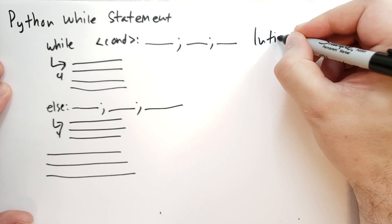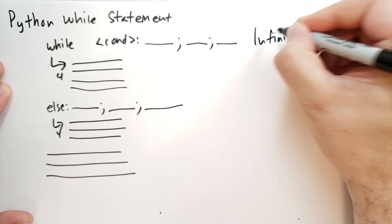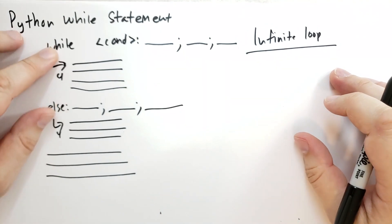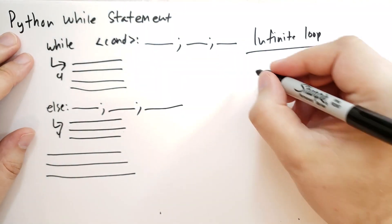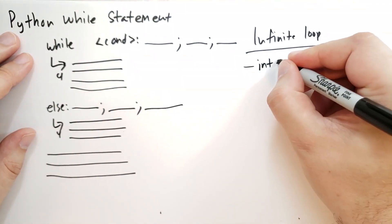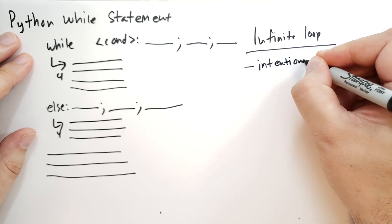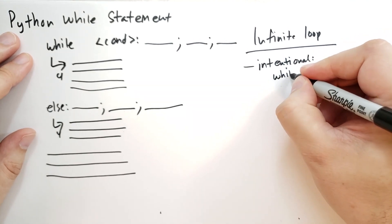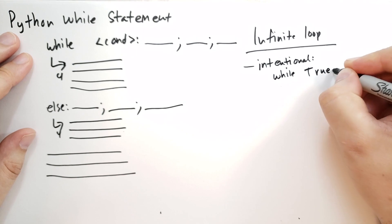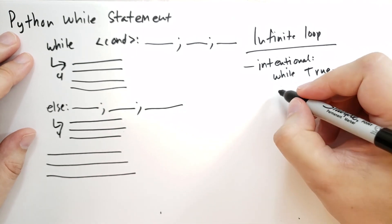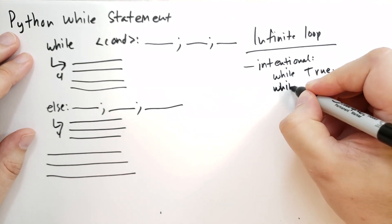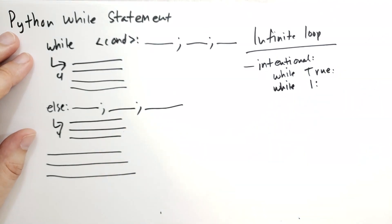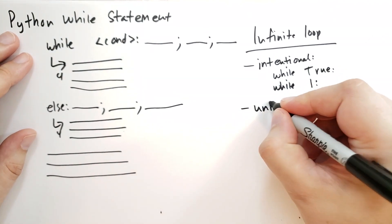An infinite loop is a while loop that never terminates. The first kind of infinite loop is intentional. You'll note these because they say things like 'while True'. True is always true — it's never false. Older versions of Python didn't have Booleans, and so you still might see some old programmers say 'while 1'.